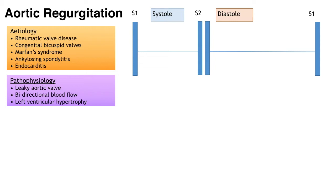Aortic regurgitation can occur acutely or chronically. Acute aortic regurgitation is a medical emergency with high mortality, resulting in an acute rise in left atrial pressure, pulmonary oedema and cardiogenic shock. The end diastolic pressure in the left ventricle rises sharply; the heart tries to compensate by increasing heart rate and contractility but this is insufficient to maintain normal stroke volume, leading to pulmonary oedema and cardiogenic shock.